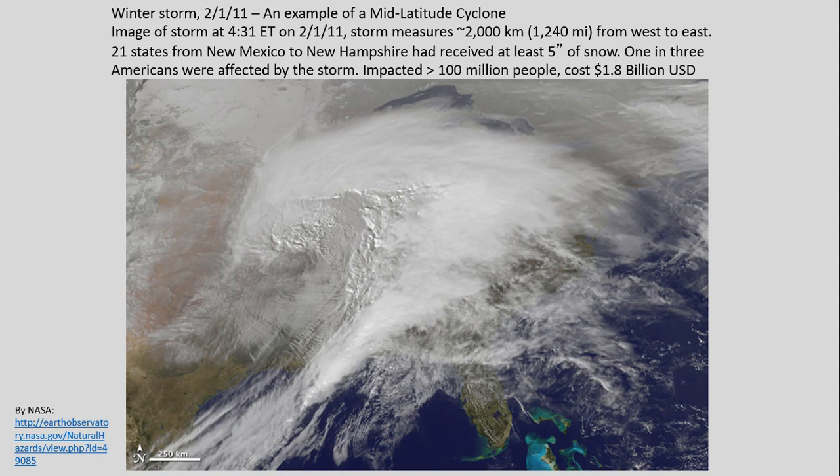This is a winter storm I was stuck in the middle of several years ago when I used to live in Michigan. I'm somewhere underneath here when this is occurring at the beginning of February in 2011. These storms are quite extensive in terms of their size. You can see this is covering over 2,000 kilometers or well over a thousand miles from west to east and north to south extent. 21 states received at least five inches of snow. In Michigan we definitely received a lot more than that—it broke the snow record for that day and time period.